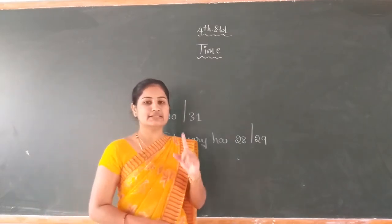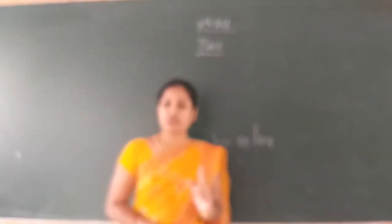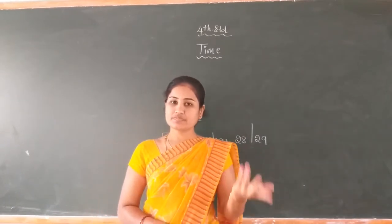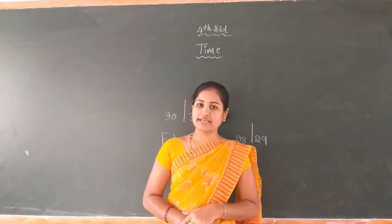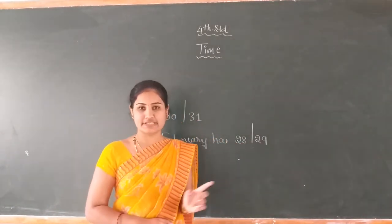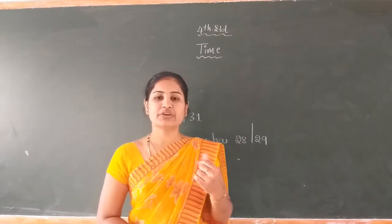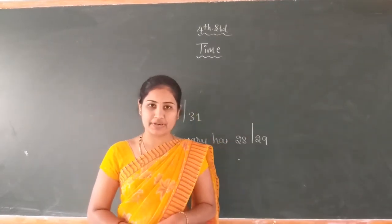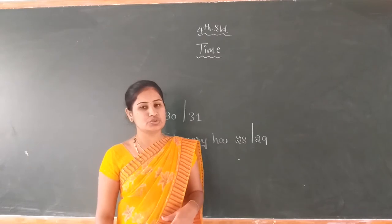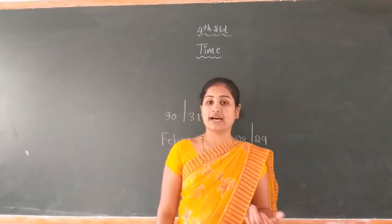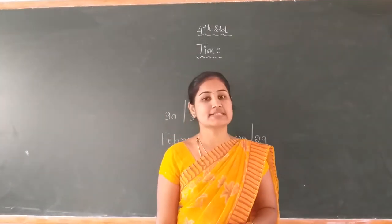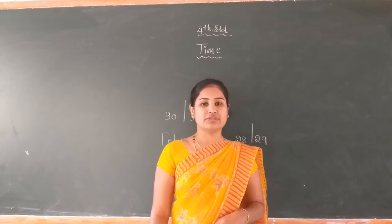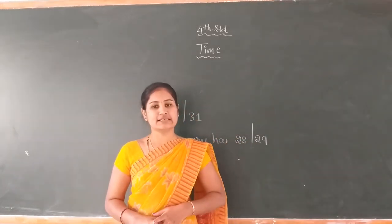Dear student, there are 12 months present in 1 year. What are they? They are January, February, March, April, May, June, July, August, September, October, November, and December.